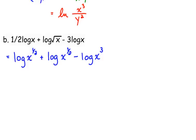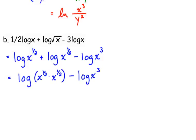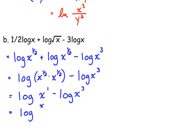Now we can use our properties to condense. When you have multiple operations, go left to right. So we're adding those first two logs — I'll write that as the log of a single product. x to the one-half times x to the one-half: when multiplying things with the same base, we add the exponents. One-half plus one-half is one, so that's just x to the first. Leaving the last term on the end for the moment.